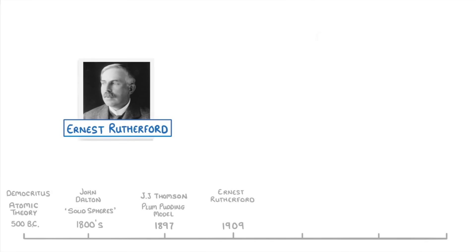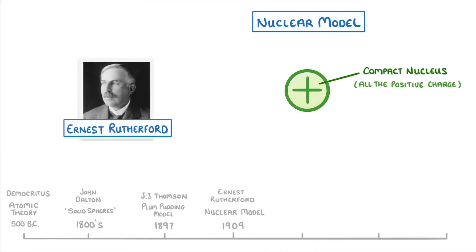Because of these results, Rutherford suggested his nuclear model, which proposed that instead of a general field of positive charge, there was some sort of compact nucleus which contained all of the positive charge of the atom, and he thought that the negative charge must exist in some sort of cloud around this central nucleus.